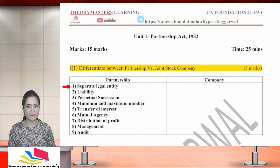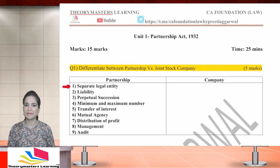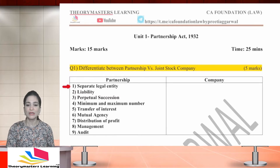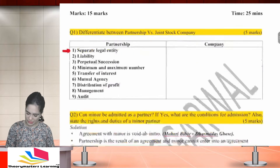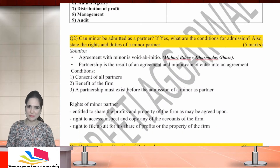Management in partnership is by the partners; a company is managed by the board of directors. Audit is not compulsory in partnership, but statutory audit is mandatory in case of a company. If you have written all that, you can give yourself marks — any five points will do. Next question: can a minor be admitted as a partner?